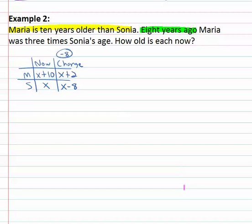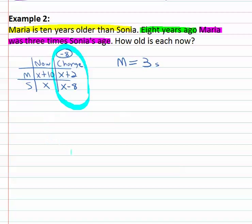Now that the change is all filled out, what happened eight years ago? Well eight years ago Maria was three times Sonia's age. Maria was past tense of is three times Sonia's age. Well now we can use this change column to build in our equation because Maria eight years ago was x plus two. So Maria is now x plus two equals three times Sonia. What was Sonia eight years ago? x minus eight. Notice the importance of the parentheses as I make a replacement.